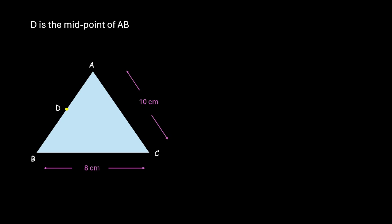And a line originates from D which intersects AC at E such that this DE is parallel to BC. Now, we need to find the length of AE and DE.